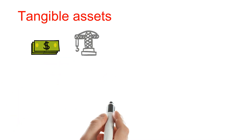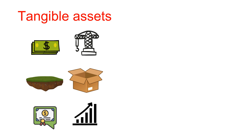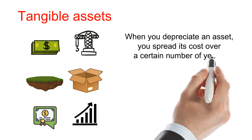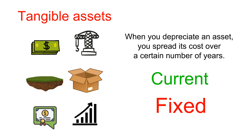Tangible assets are physical items that add value to your company. Some examples of tangible assets include cash, equipment, land, inventory, bonds, and stocks. Tangible assets depreciate over time — when you depreciate an asset, you spread its cost over a certain number of years. Tangible assets can also be broken down further into two categories: current and fixed assets. You will learn more about current versus fixed assets shortly.